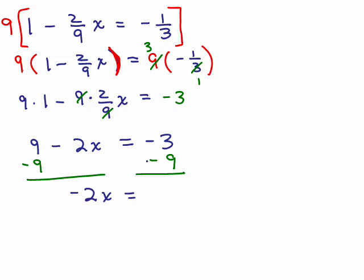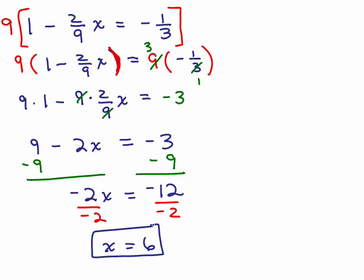So we have negative 3 plus negative 9, remember, that's negative 3 plus negative 9, that's negative 12, and now we would divide both sides by negative 2. So finally, we get x equals 6.